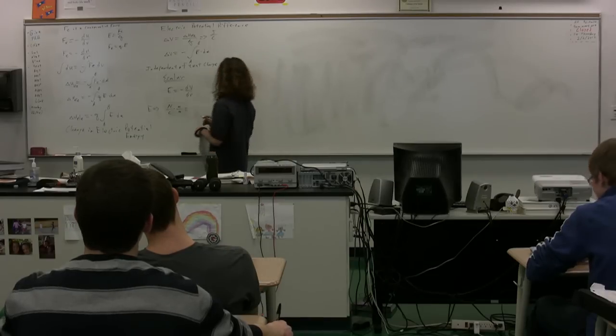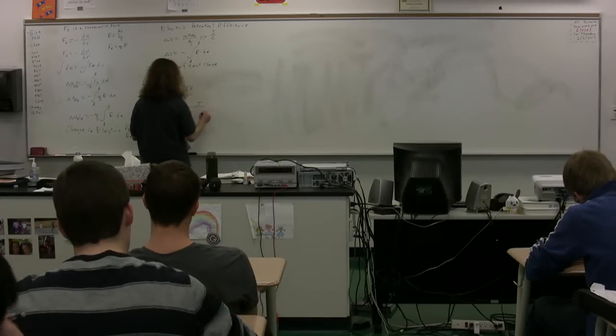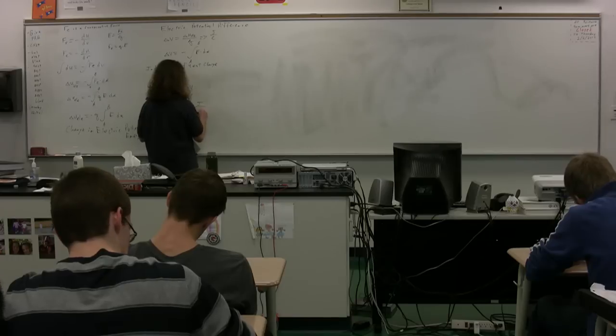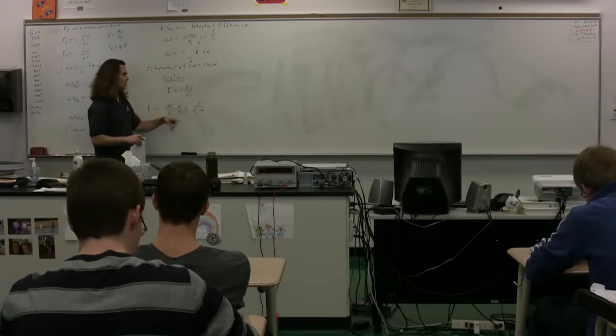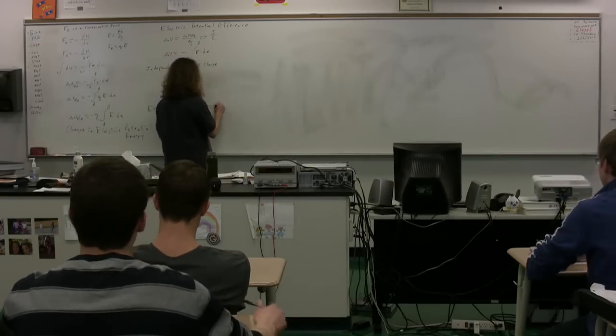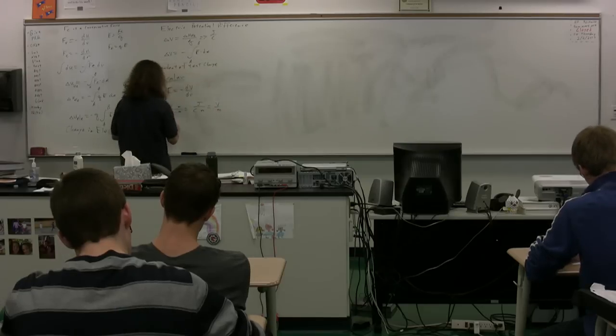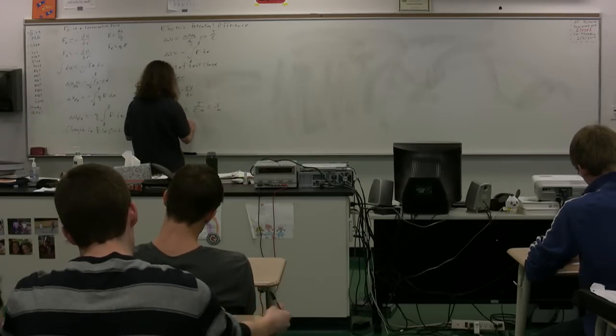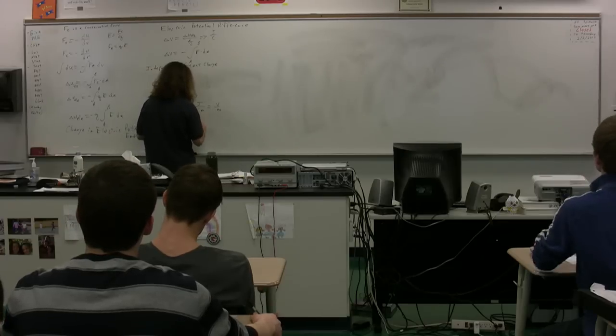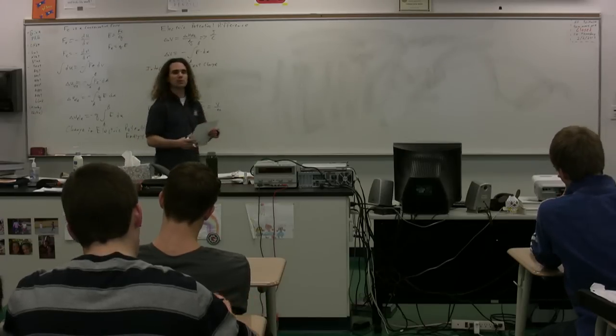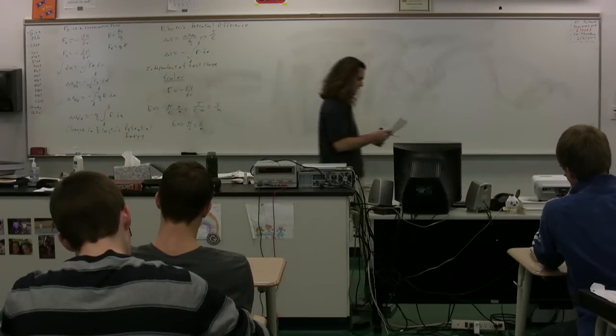On the top, we have joules. Joules divided by coulombs times meters. Or, we have joules over coulombs, which is volts, or volts per meter. So, notice that the electric field is in terms of newtons per coulomb, which is the same thing as volts per meter. Those are one and the same.